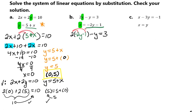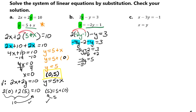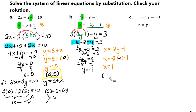Then we're going to solve for y. We distribute, which gives us negative 4y minus 2 minus y equals 3. We combine like terms to get negative 5y minus 2 equals 3, and here we solve for y. Add 2 to both sides: negative 5y equals 5. Divide by negative 5 to get y equals negative 1. Now we plug that into our second equation — x equals negative 2y minus 1 — replacing y with negative 1, which gives us x equals 1. So we're looking at the solution 1 comma negative 1.